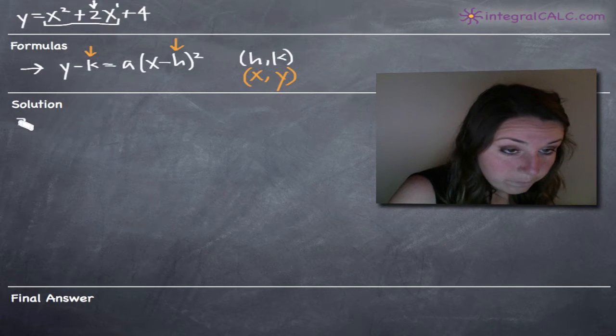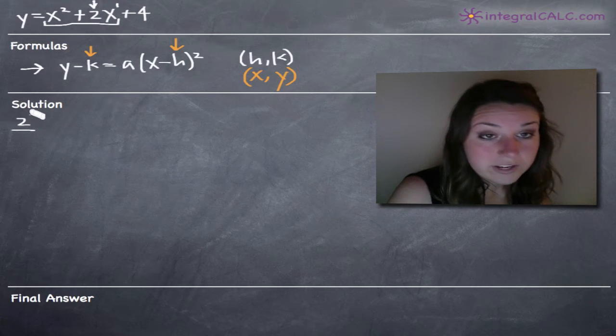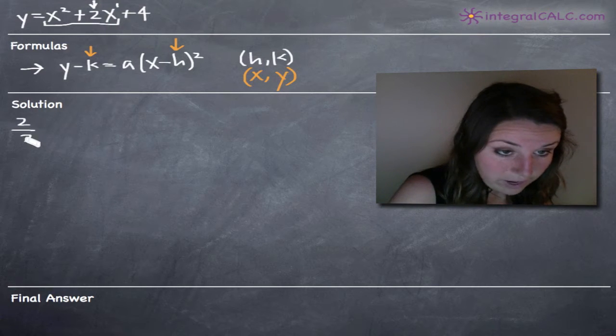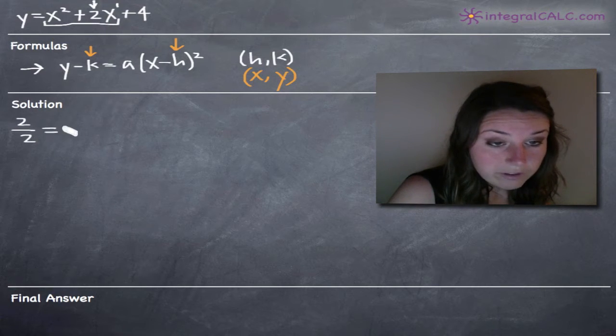This is x to the one, which means we're going to take the coefficient off of this term. So we're going to take two, and completing the square tells us that we take that coefficient and divide it by two. So two divided by two is one.